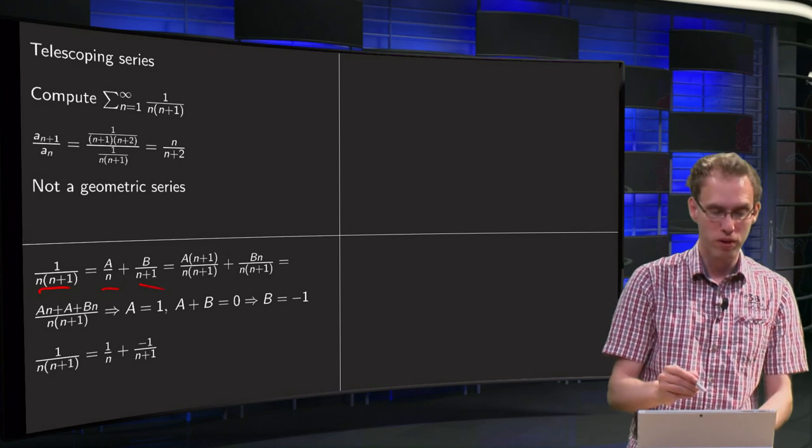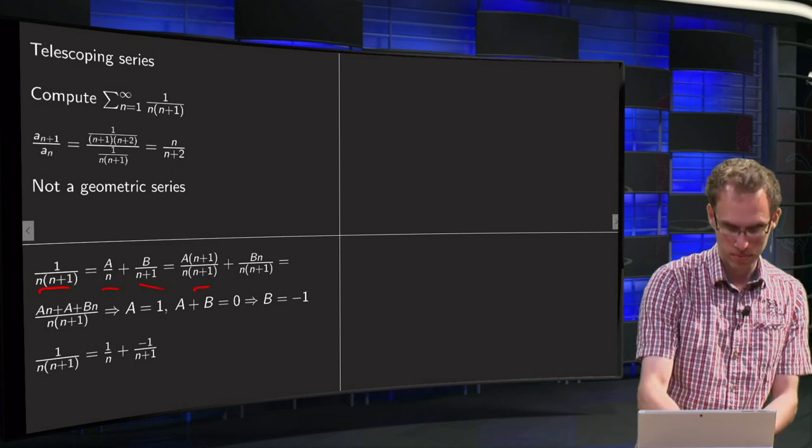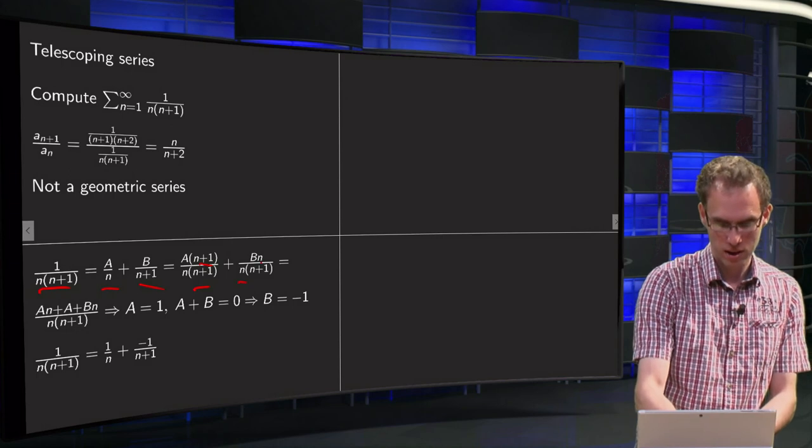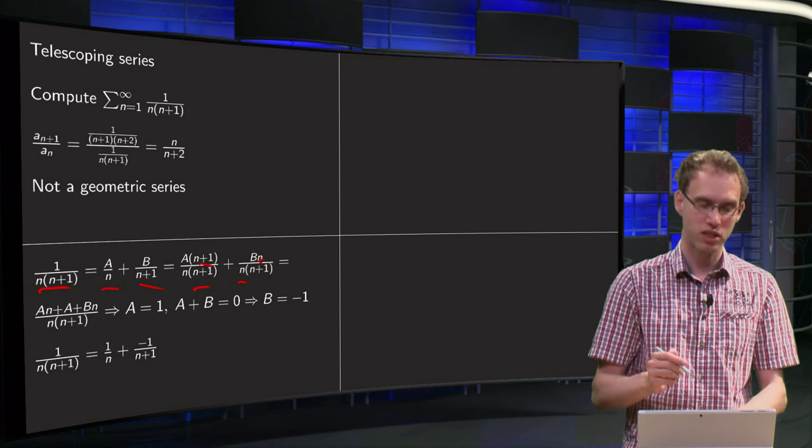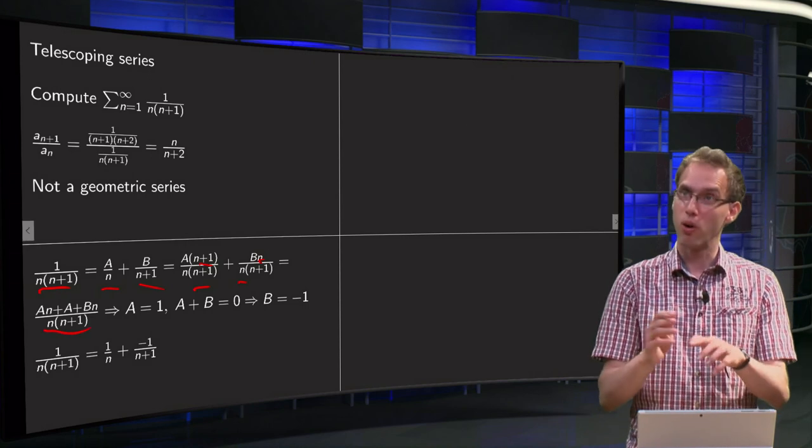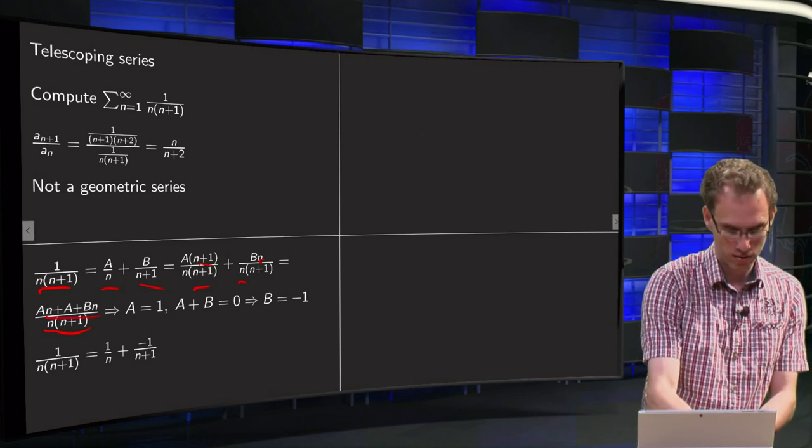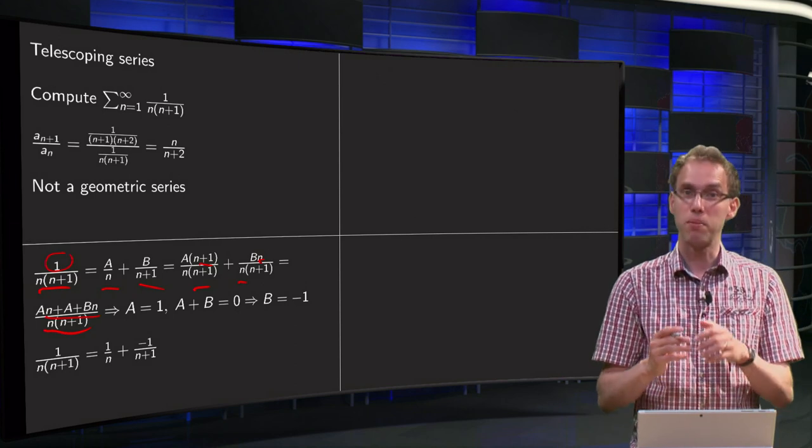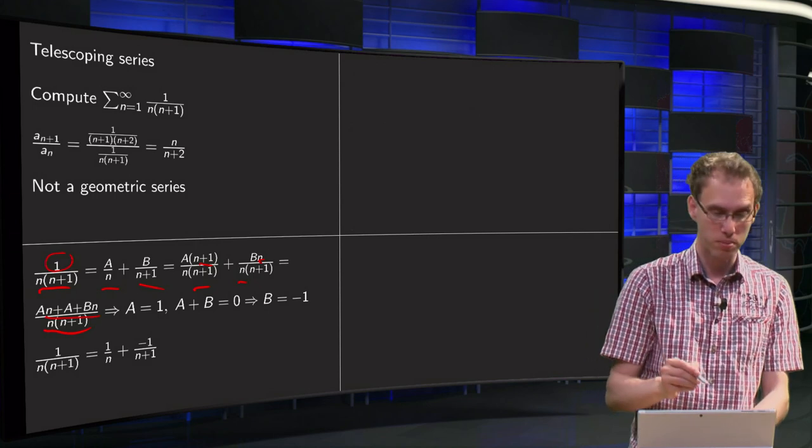Turn it again into one fraction, so we multiply the a over n by n plus 1 and the b over n plus 1 by n, and we can turn it again into one fraction because the denominator is now the same. So the denominator is n times n plus 1, and you see there are all equation signs, so the numerator here has to be equal to 1. So we see that a plus b times n plus a has to be equal to 1 plus 0 times n.